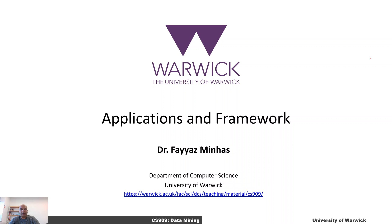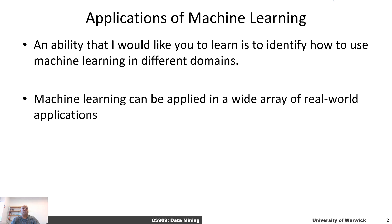The objective of this lecture is to enable you to identify machine learning problems around you. I feel that is an important aspect of being a data scientist. It's one thing to be able to run different types of algorithms, such as neural networks, nearest neighbor, or support vector machines. But it's equally important to identify different types of machine learning problems around you, and that is what we are going to do. An ability I would like you to learn is to identify how to use machine learning in different domains.